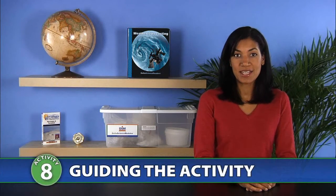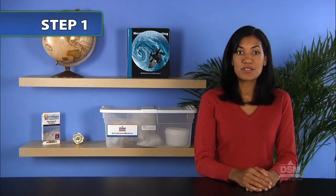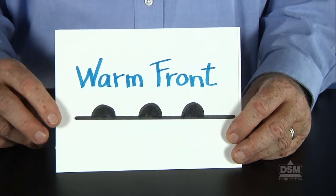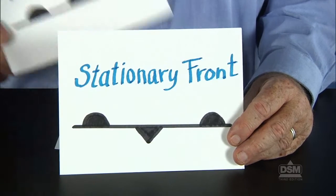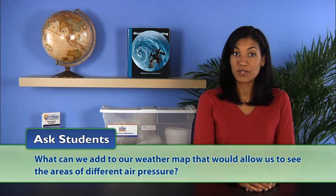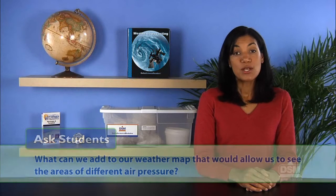To begin the activity, remind students that areas of different air pressure are associated with different weather conditions. Then, remind students about the weather map symbols they learned in the previous activity and how useful they are. Ask students what can be added to the weather map that would allow them to see areas of different air pressure. Students may suggest connecting points of similar air pressures across the country.